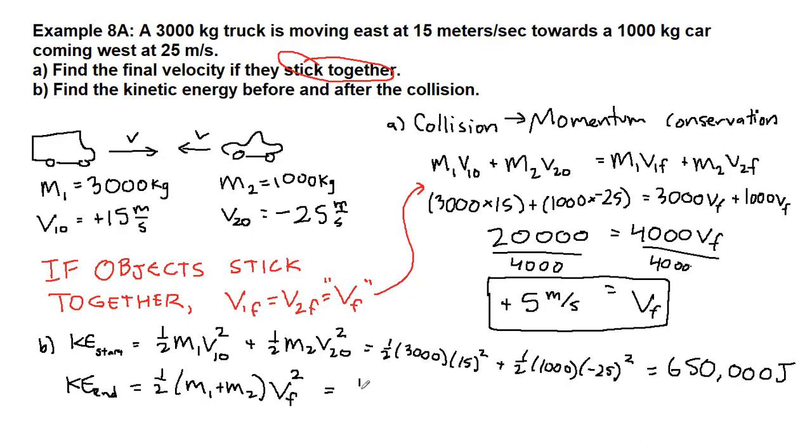At the end of the situation we have 1 half and we have 3,000 plus 1,000 for the total mass times this final 5 squared and we end up with 50,000 joules.